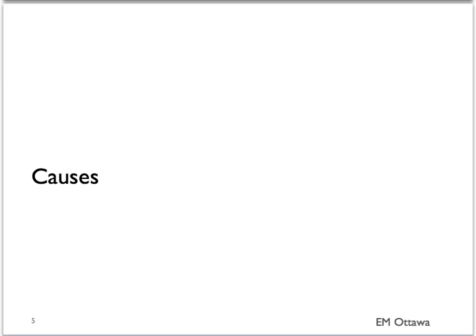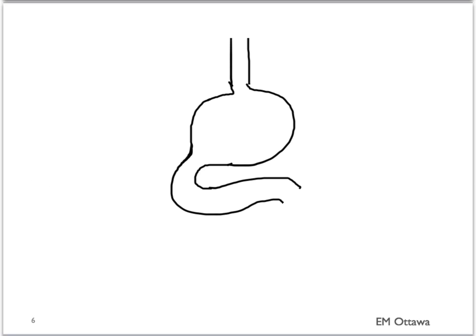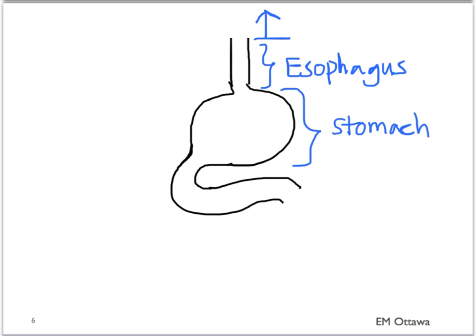To look at the causes of upper GI bleed, we will look at it anatomically. It includes bleeding from proximal to the esophagus, bleeding from the esophagus, bleeding from the stomach, and bleeding from the duodenum.